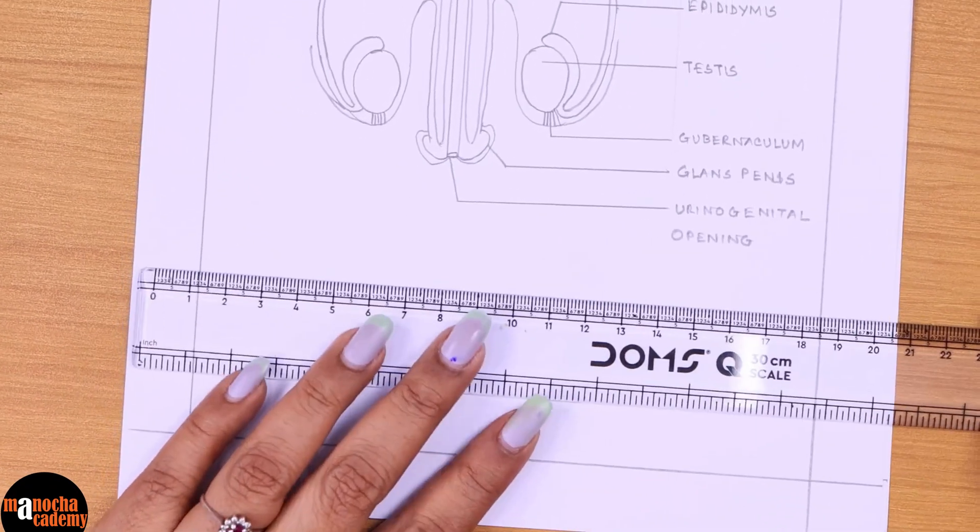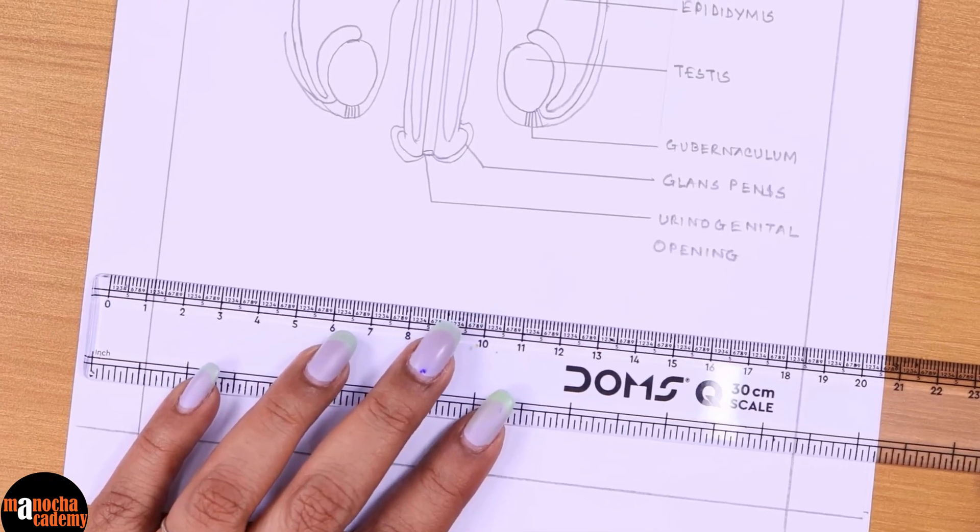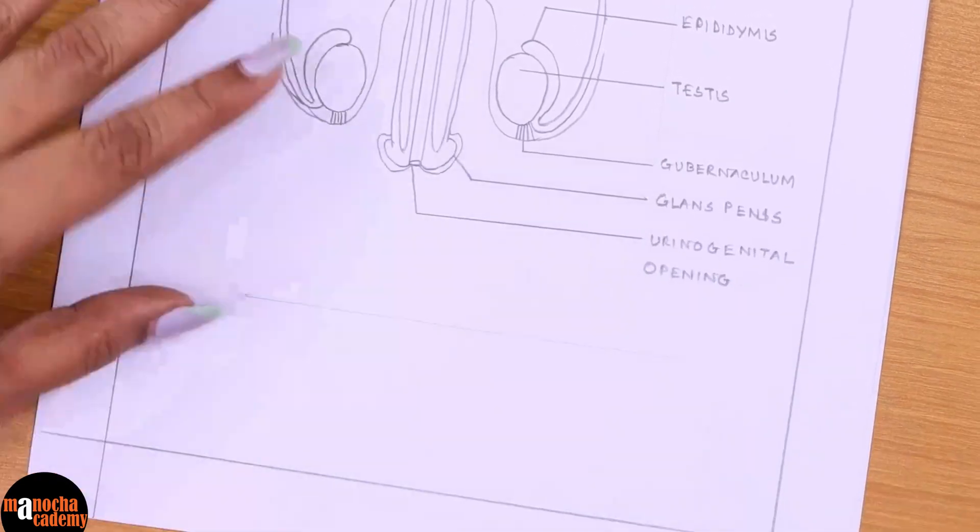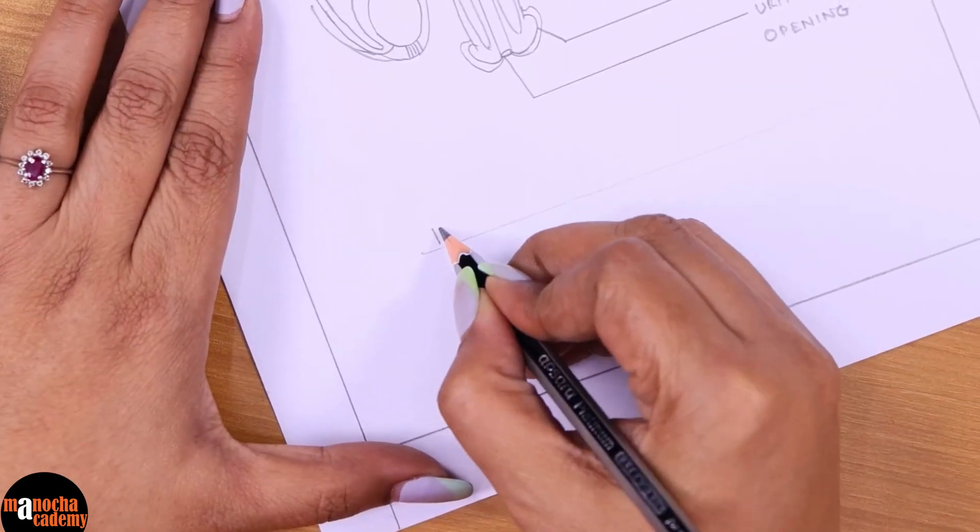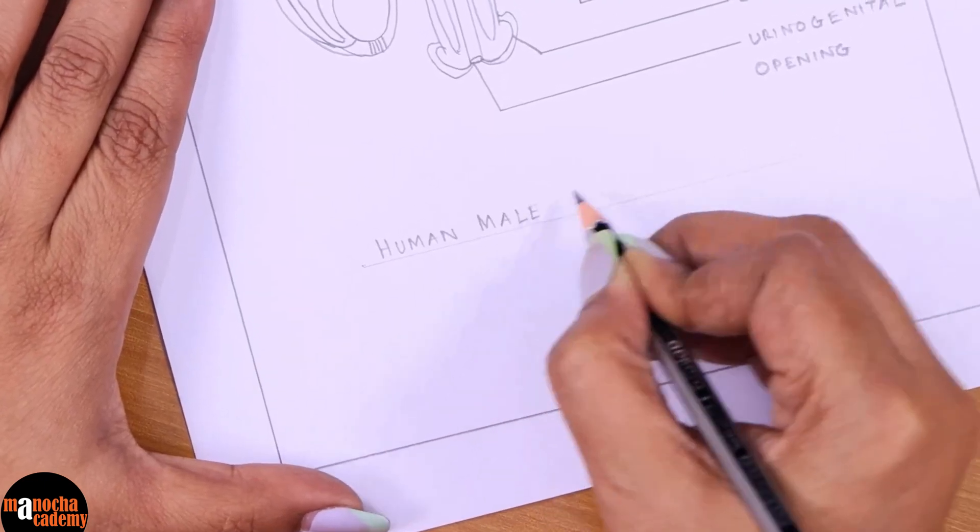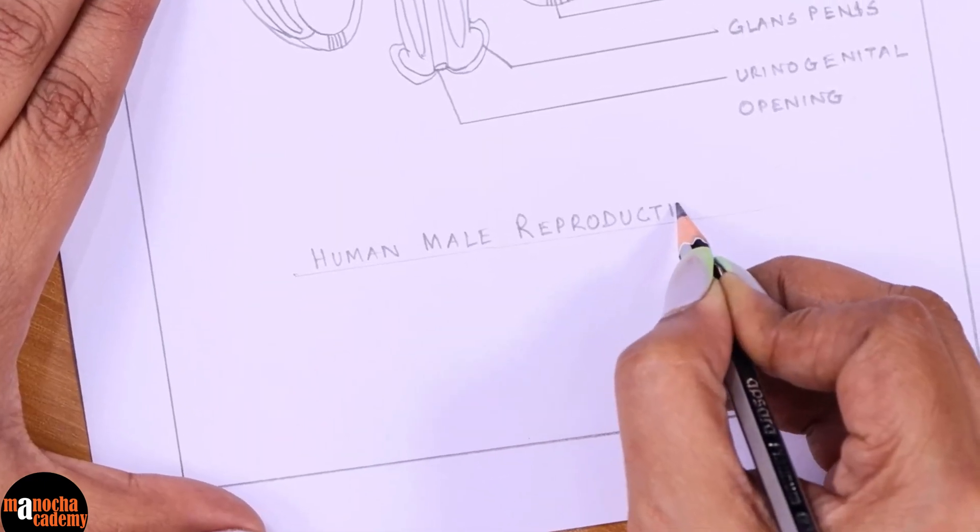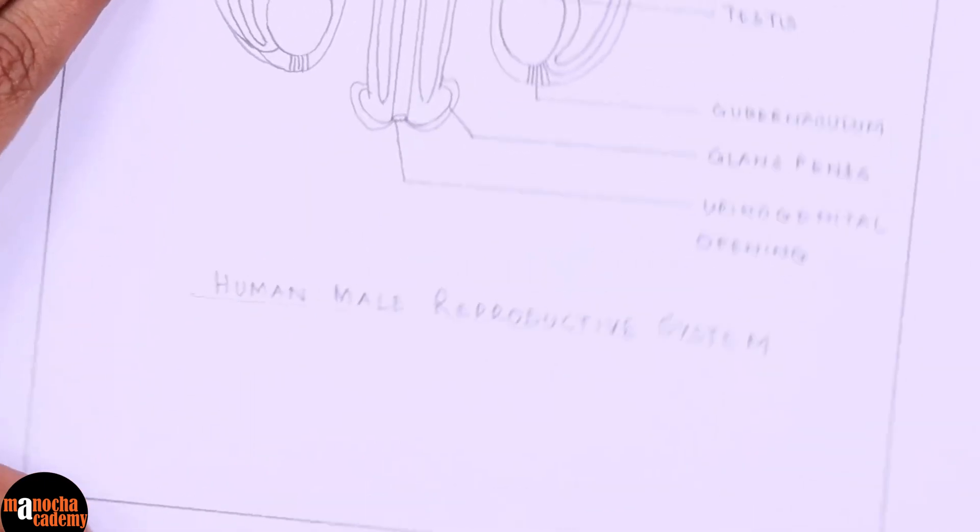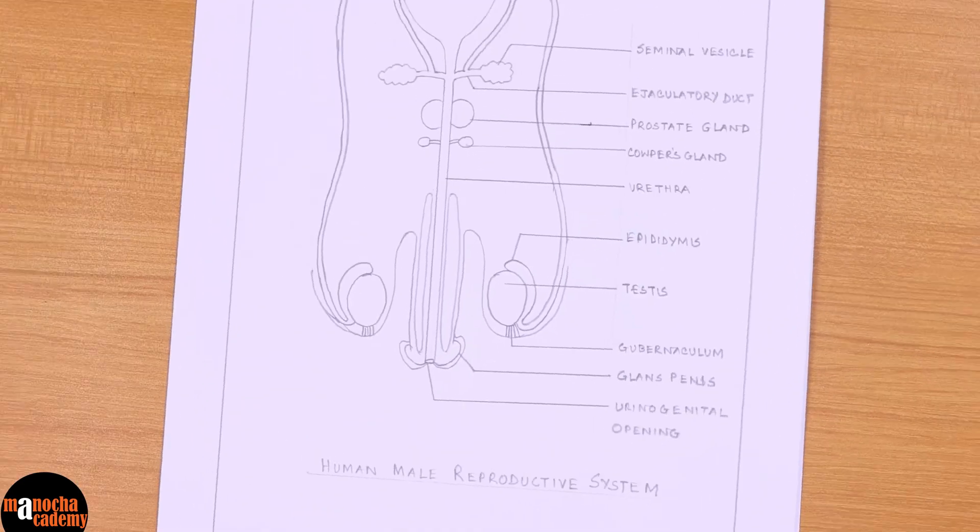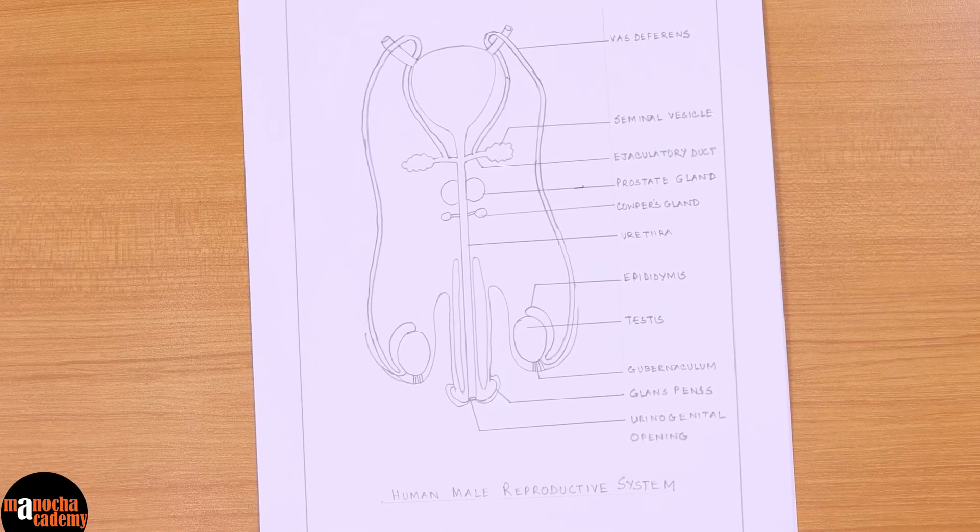As always, a reminder to give a heading or footer to the diagram that you have drawn. This is the Human Male Reproductive System. That is how you draw the diagram of the male reproductive system. That was all for today's video. I hope you liked the video and learned from it.